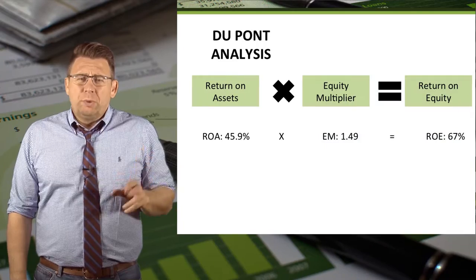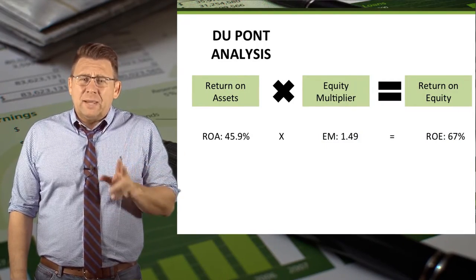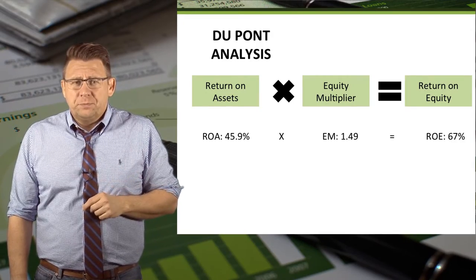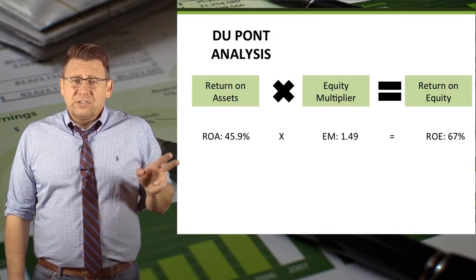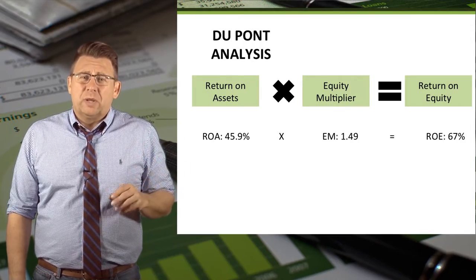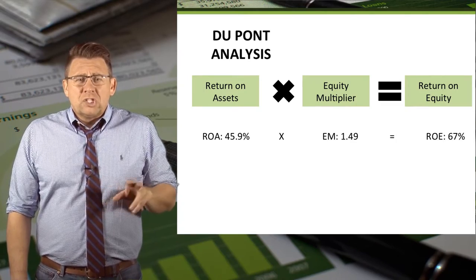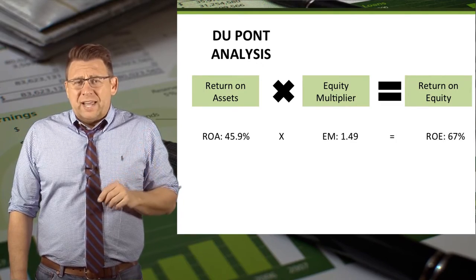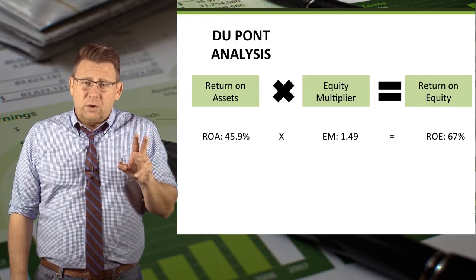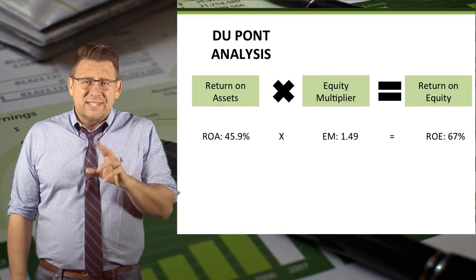The basic DuPont formula is return on assets times the equity multiplier equals return on equity. You can see the result from the examples in the return on assets, equity multiplier, and return on equity videos. DuPont analysis allows us to analyze return on equity as a result of the company's assets and leverage.